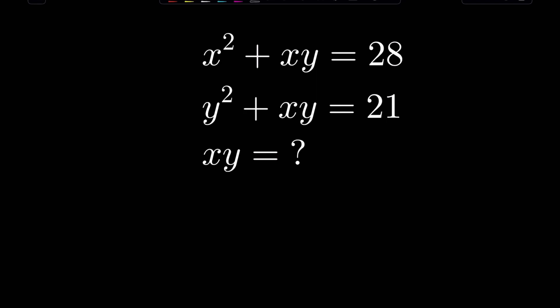If x squared plus xy is equal to 28 and y squared plus xy is equal to 21, find the value of x times y.